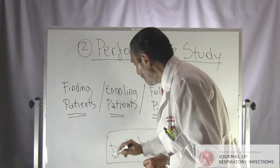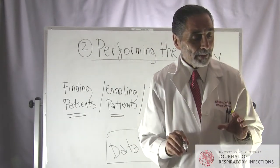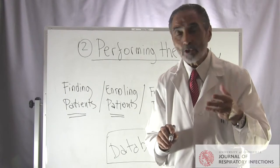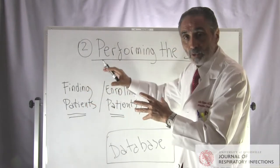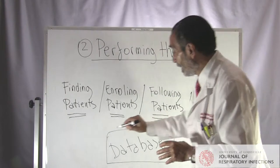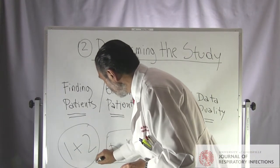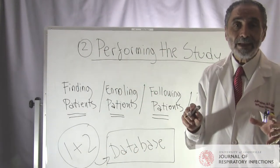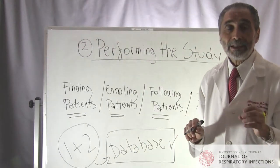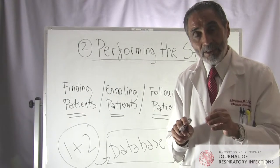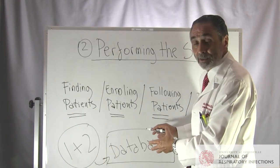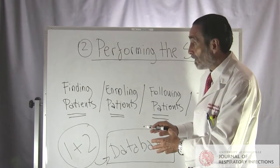All the information from performing the study is entered into the study database. At the end of the day, step one plus step two are both summarized in your database. This is why the database is a critical element — and why, when you start writing your study protocol and study manual, you should already be thinking about what your database will look like, because it is the only thing that summarizes all the efforts of steps one and two.